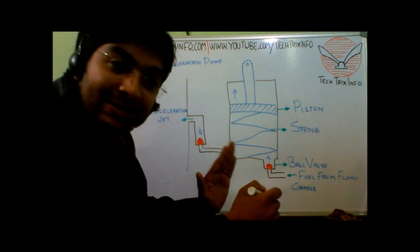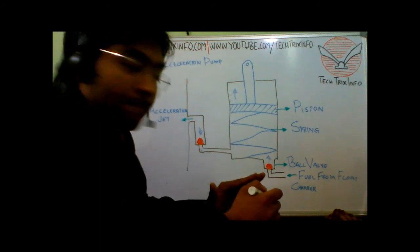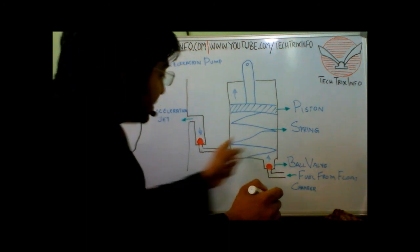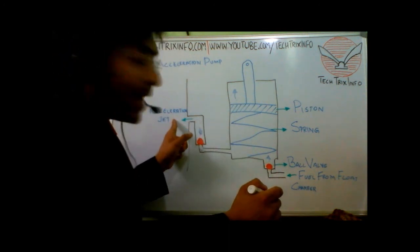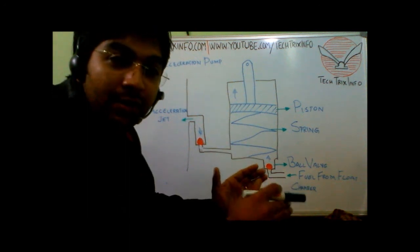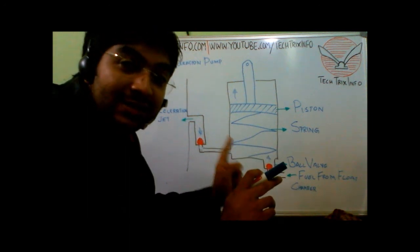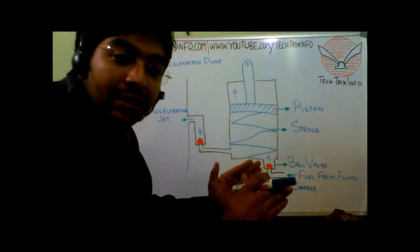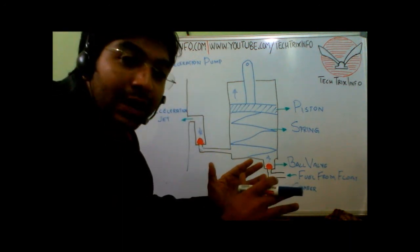The fuel which has been sucked inside will be stored here for the next cycle of operation. When the next sudden acceleration happens, this fuel which is additionally being stored here will be supplied through the acceleration jet to satisfy the demand. One more thing to note is that this is a separate pump employed with the standard fuel injection pump on an engine.